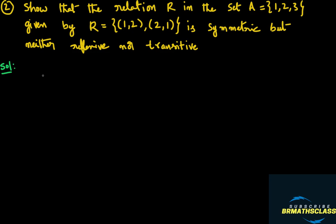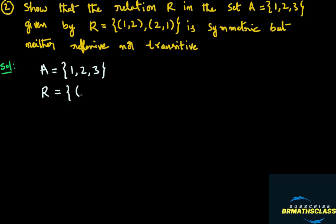We will try to understand the given question: Show that the relation R in the set A. R is a relation on set A, defined as R equal to the set containing ordered pairs (1,2) and (2,1). We need to show that this relation is symmetric but neither reflexive nor transitive. The relation is defined on set A, where set A is {1, 2, 3}, and R is given as ordered pairs (1,2) and (2,1). This is actually the simplest relation.